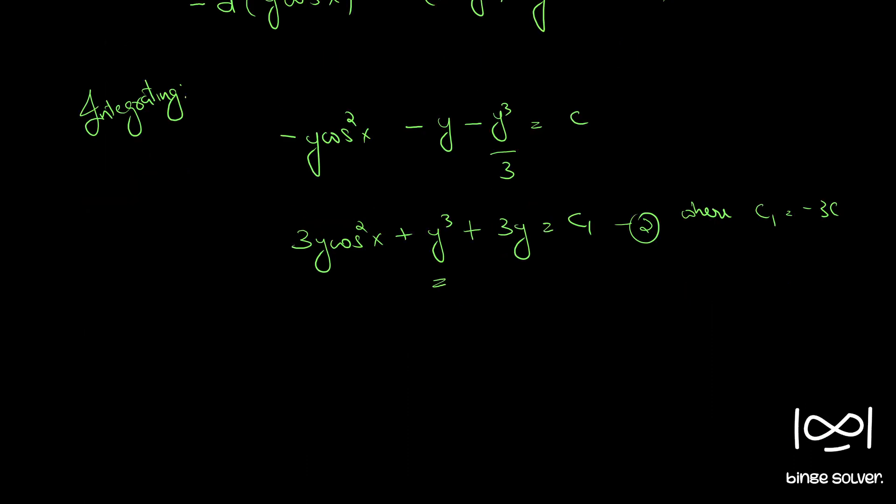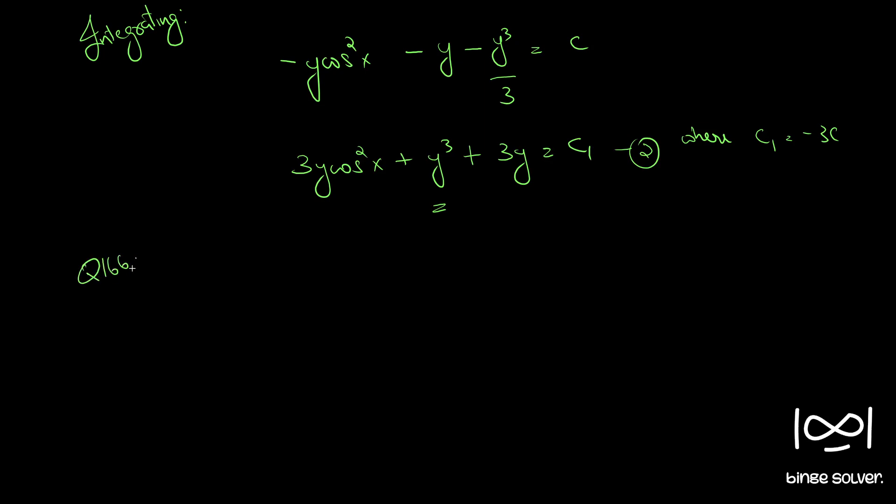If you check rougher question number 166, you can see, we first showed this differential equation is exact, and then solve using integral m dx plus integral terms in n without x equal to c, dy is equal to c, that solution, that steps. Then there we got the solution as, if you go and check out the question number 166, there we got the solution as, dy cos 2x plus 9y plus 2y cube plus 2y cube equal to a constant. We got the solution as this. So, these two are same, the solution for question 184, and this solution is same.